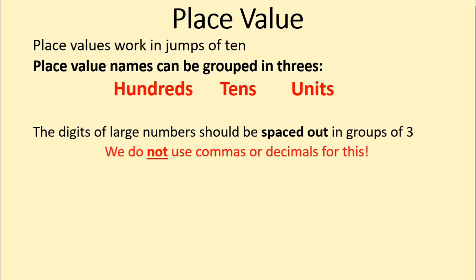We never use commas or decimals for this grouping, because different countries use different conventions. In Spain, they often use decimal points, whereas in America, Canada, and the UK, commas are common. So that we don't get into an argument about this, we're not going to use either of them — we're just going to use spaces.